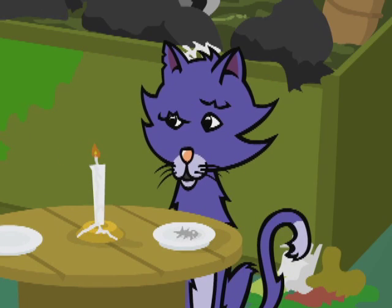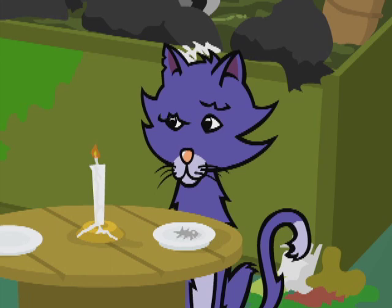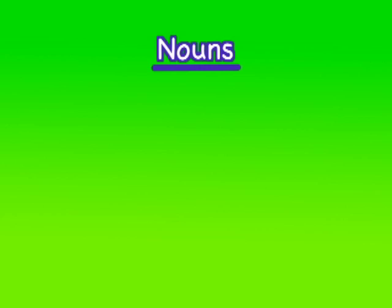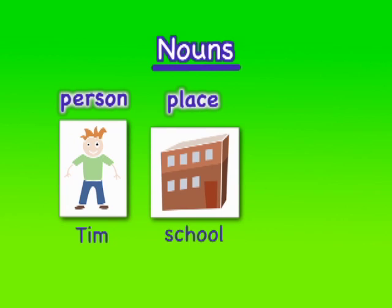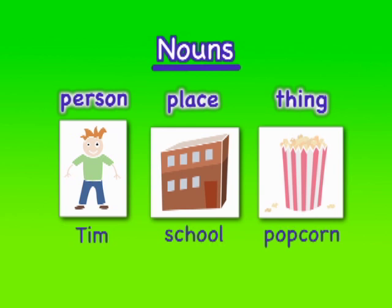We'll start with nouns. A noun names a person, like Tim, a place, like school, or a thing, like popcorn.